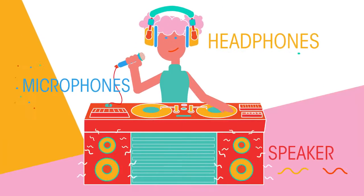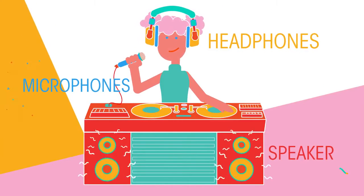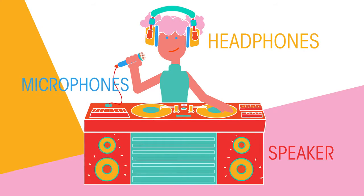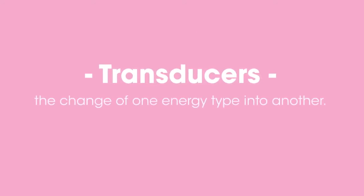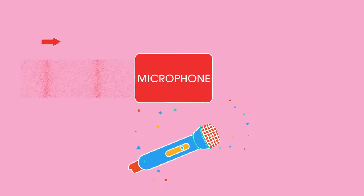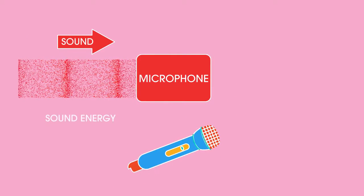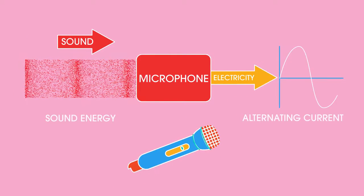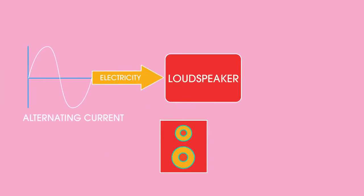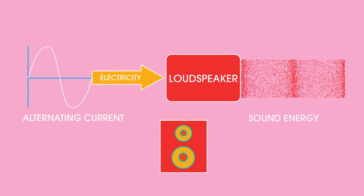The loudspeaker and microphone were both invented well over a century ago, and their basic design has changed very little since then, though they may look different today. Both are transducers, which means they change one energy type into another. A microphone transfers sound energy into electricity, and a loudspeaker transfers electricity into sound.